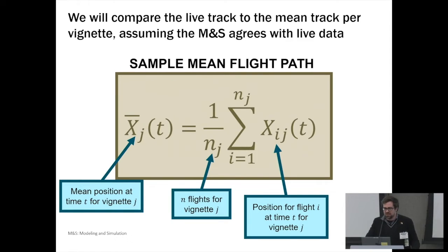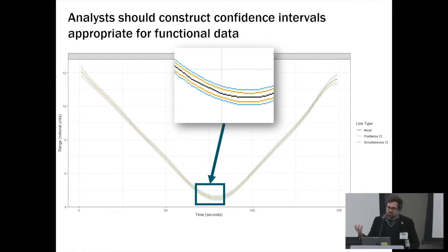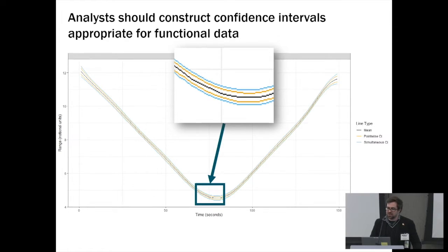So given that, what should we do? The first thing we're going to do is compute the mean track. For any point in time, just take the average of all of the track values at that time to get the mean track's position — you're effectively taking a bunch of functions, adding them together, and dividing by the number of functions, which corresponds to how one would usually compute the mean. We will compute the mean curve or mean track for any one of these vignettes. There are also ways to construct confidence intervals sensitive to the fact that we're working with functional data, whether doing a point-wise interval or a simultaneous confidence interval.